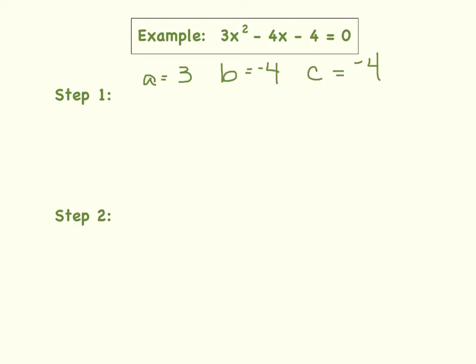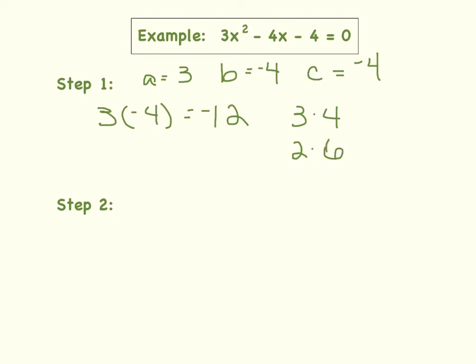Well, what is a times c? That would be 3 times negative 4. So 3 times negative 4, which equals negative 12. So what are some factors of negative 12 that would add or subtract to equal negative 4? Well, I know that 3 times 4 is equal to 12, and of course we could make one negative, one positive. I also know that 2 times 6 is equal to 12, and 1 times 12 is equal to 12.